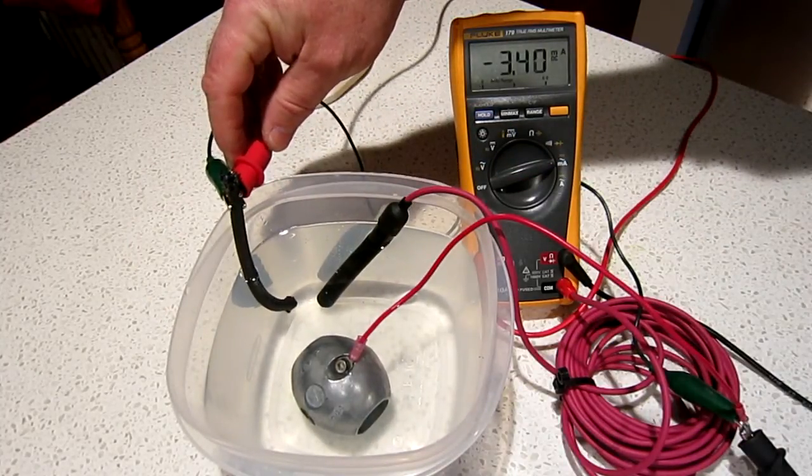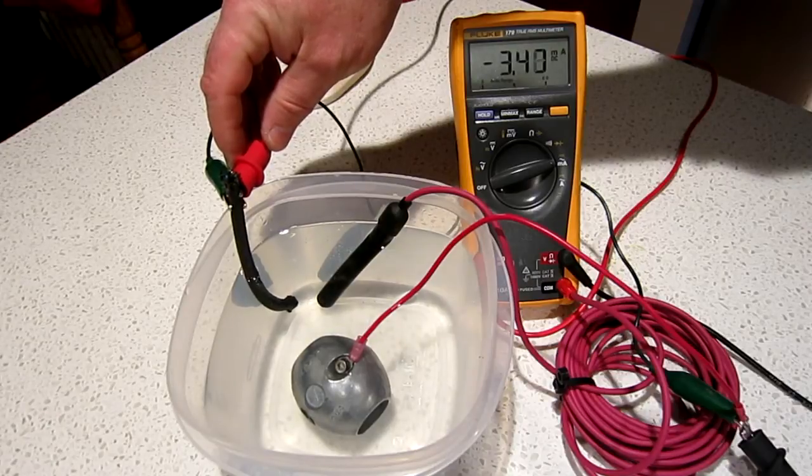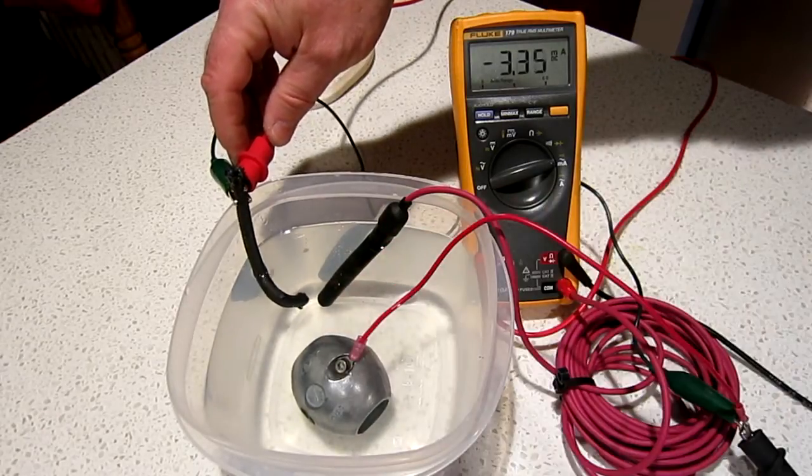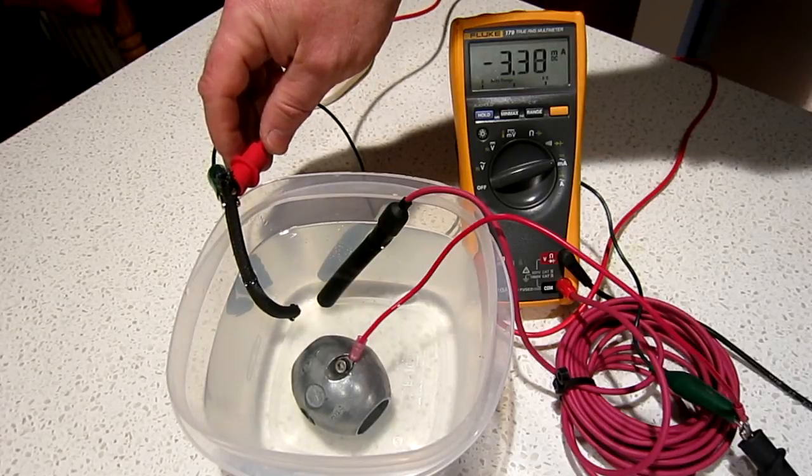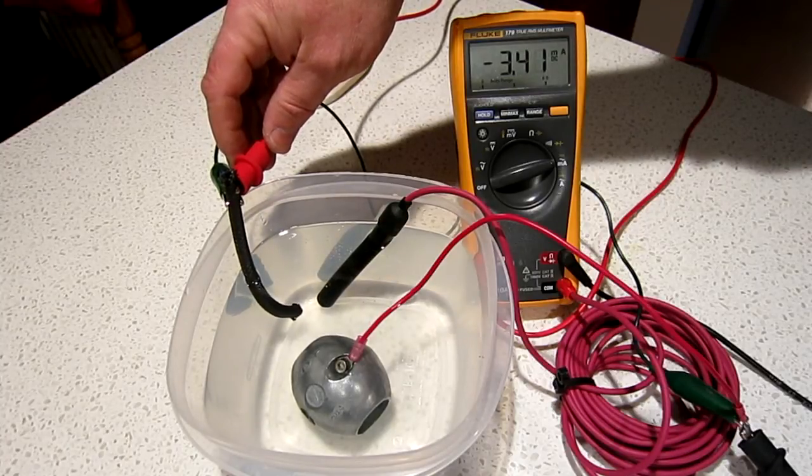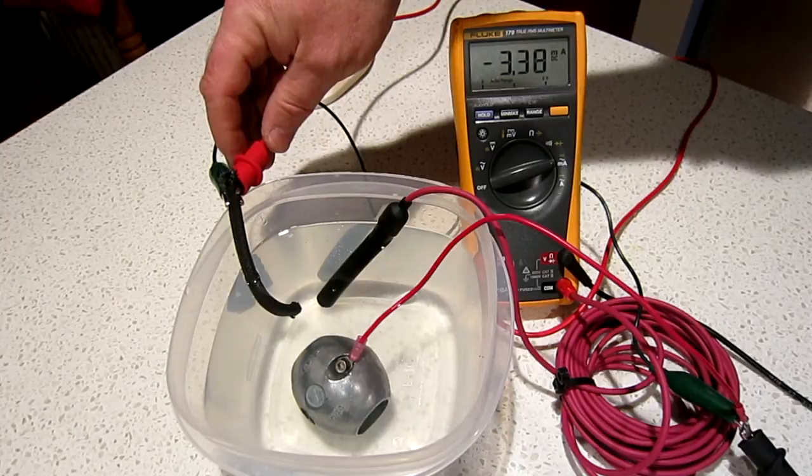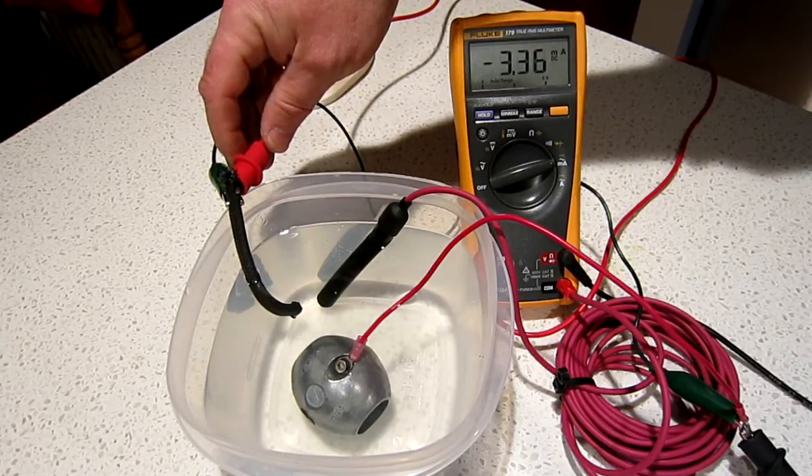We're going to measure the current created by this. Look at that. That is the current that's flowing right now in the water between probably an inch of packing that's in the water and the zinc. That's the current that's flowing.